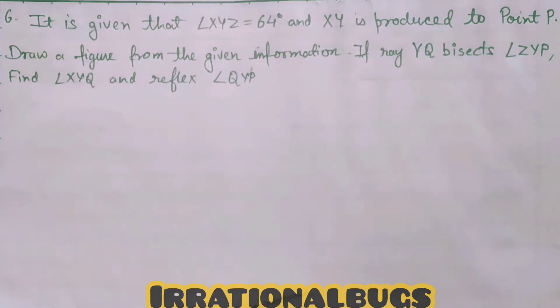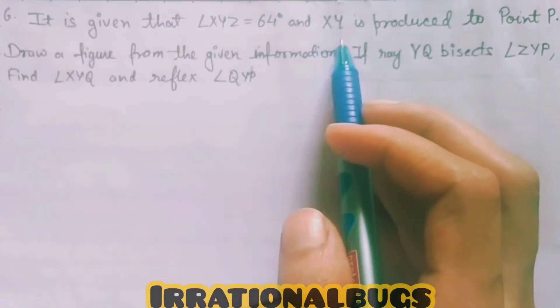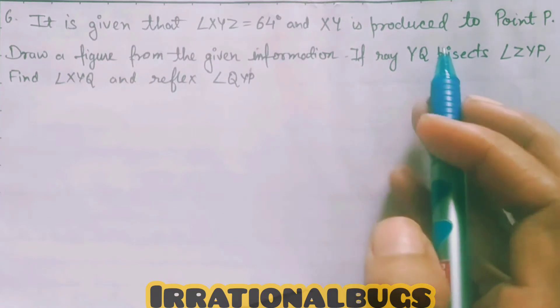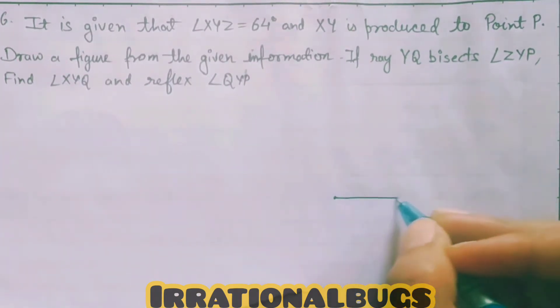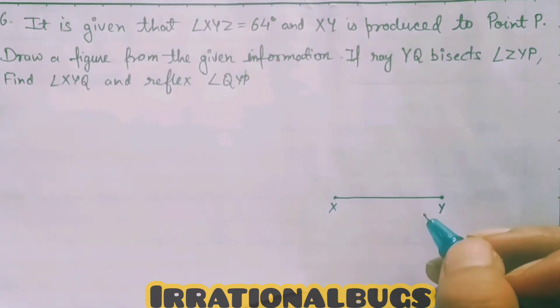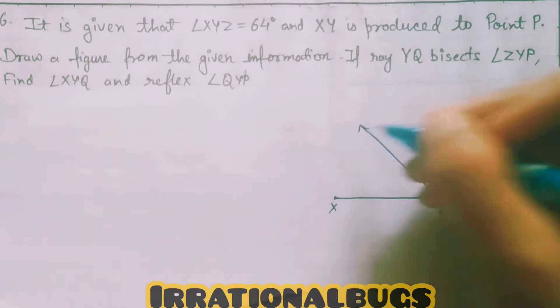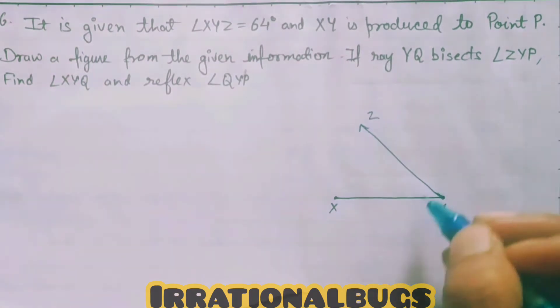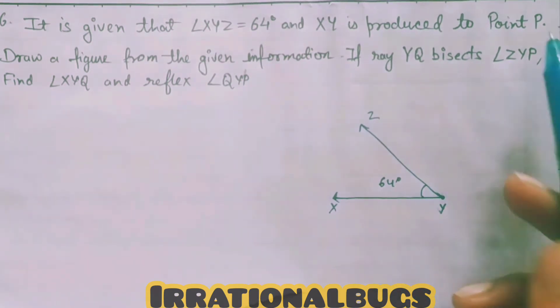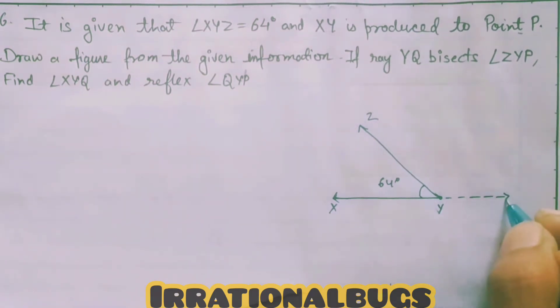So, first of all we draw a diagram. It is given that angle XYZ is 64 degrees and XY is produced to point P. XY we call base line, I am drawing a line. This is X, this is Y. Angle XYZ is 64 degrees. This is Z, 64 degrees given. XY is produced to point P.